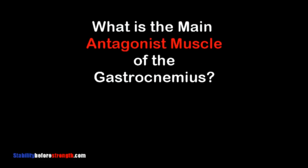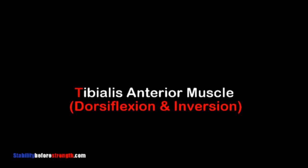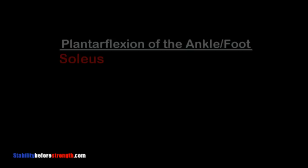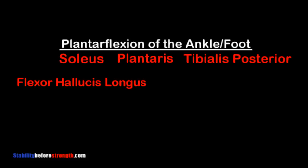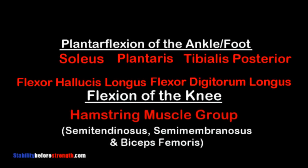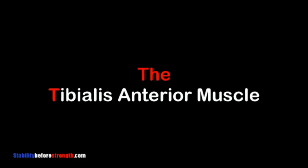What is the main antagonist of the gastrocnemius? The tibialis anterior muscle is the main antagonist since it performs dorsiflexion, which is the opposite of plantar flexion. The main synergists of the gastrocnemius are the soleus, plantaris, tibialis posterior, flexor hallucis longus, flexor digitorum longus, and the hamstring muscle group. The main antagonist is the tibialis anterior muscle.